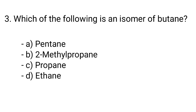Question number 3. Which of the following is an isomer of butane? Option A: Pentane, B: 2-methylpropane, C: Propane, D: Ethane. The correct answer is option B, 2-methylpropane.